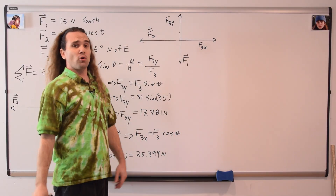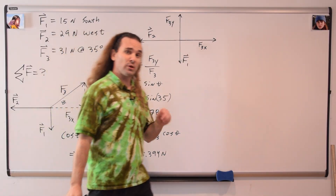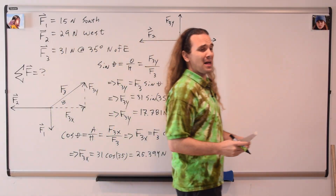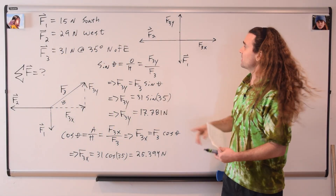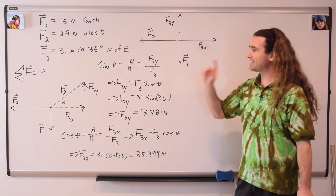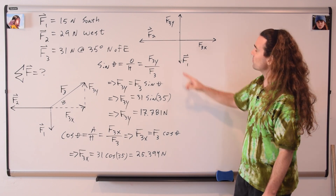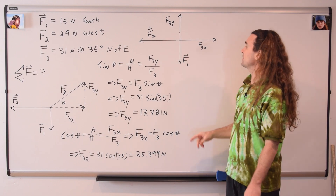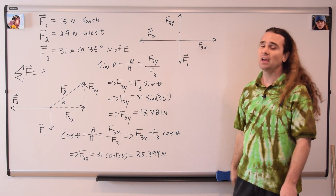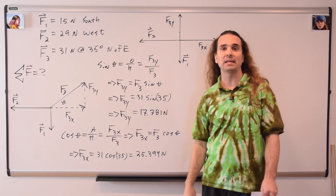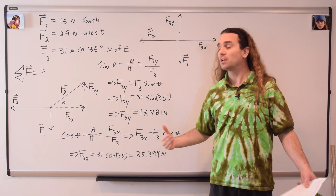Then we need to redraw the free body diagram. We still have force two and force one, but instead of having force three, we now have force three in the y direction and force three in the x direction.